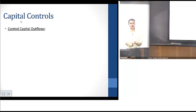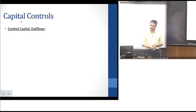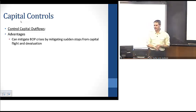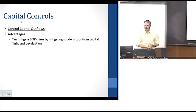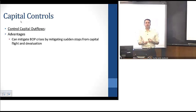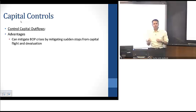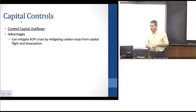One way to do that is through controlling the amount of capital flows that come into and out of the country. For instance, we can look at capital outflows. If the government is controlling the amount of capital that's flowing out of the economy, that could actually have beneficial impacts because it can mitigate capital flight, which helps mitigate a balance of payments crisis that could occur from sudden stops in capital flight.